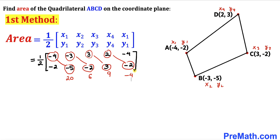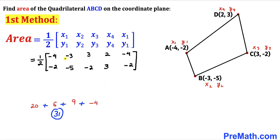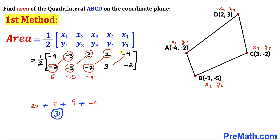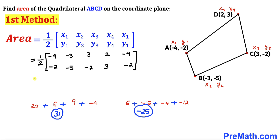Adding those numbers gives us 31. Now we multiply diagonally the other way: -3 times -2 gives +6, 3 times -5 gives -15, 2 times -2 gives -4, and -4 times 3 gives -12. Adding all of these up gives us -25.